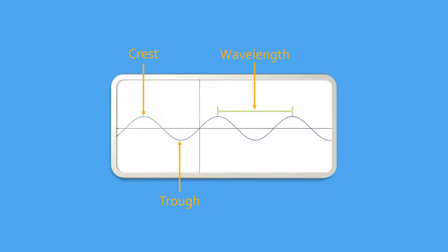Wavelength is the distance between two identical points, for example, the distance between two adjacent crests. Amplitude is the maximum displacement from its central value, or half the distance between the crests and the trough.